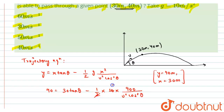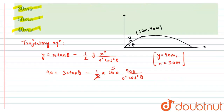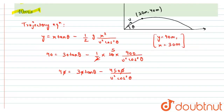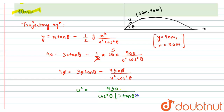This simplifies — cancelling by 5 — to: 40 = 30·tanθ − 4500 / (u²·cos²θ). After cancelling 10 from the whole equation and taking LCM and solving further, we get the final equation: u² = 450 / [cos²θ · (3·tanθ − 4)].